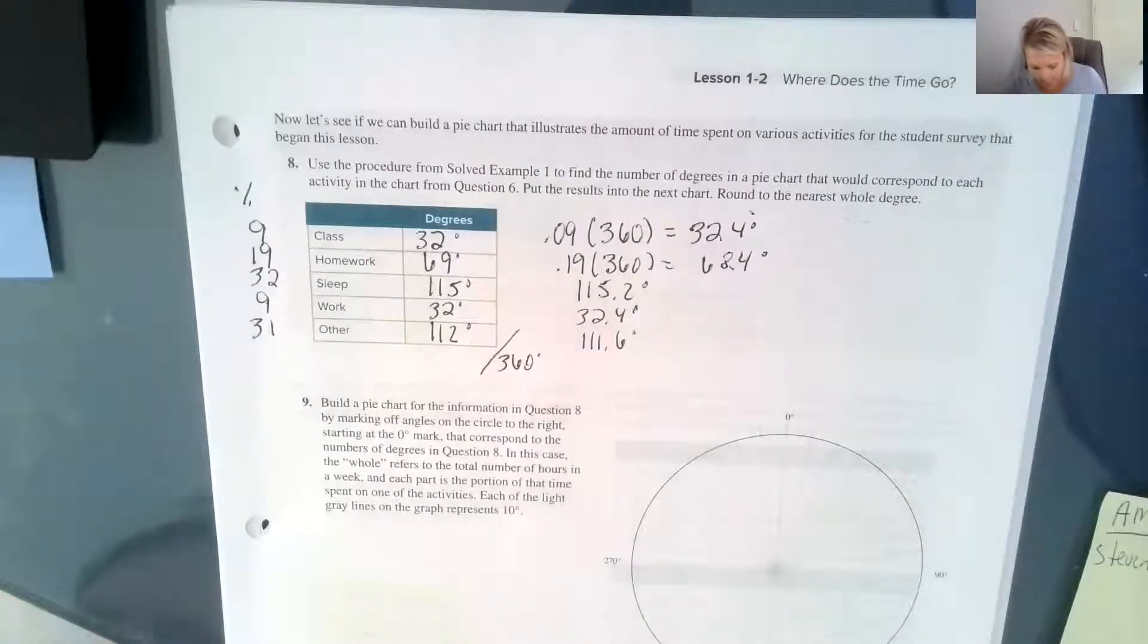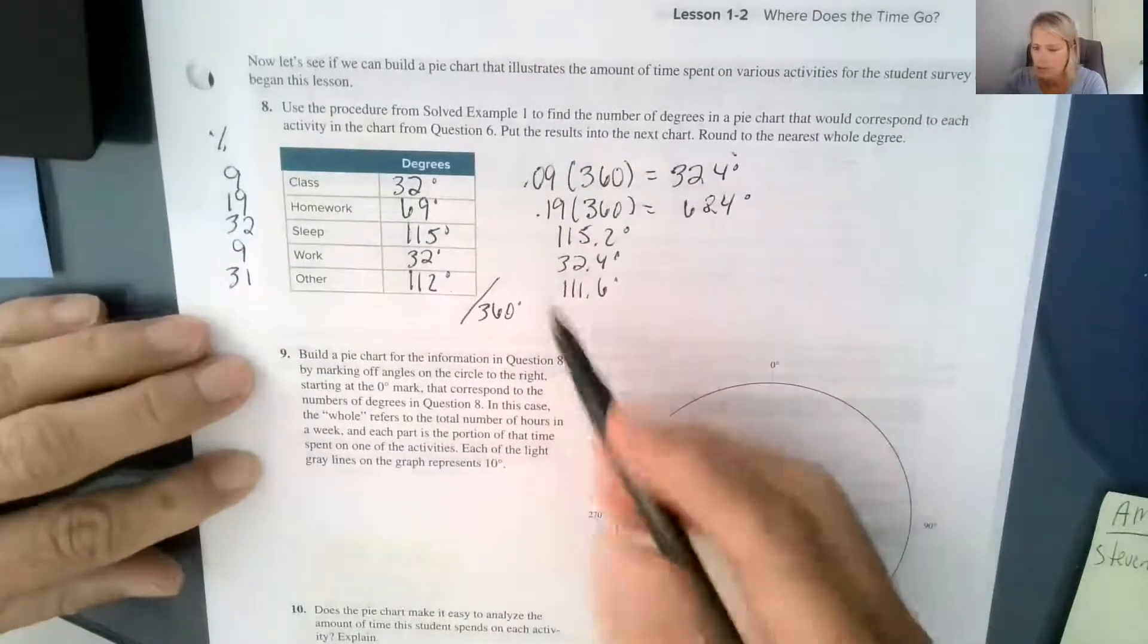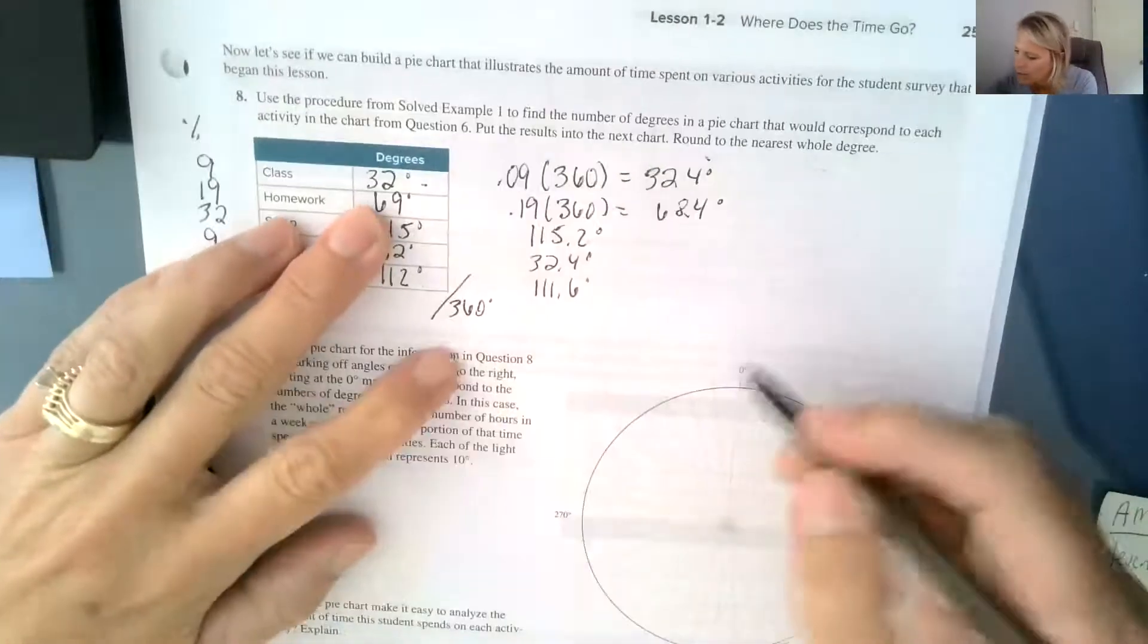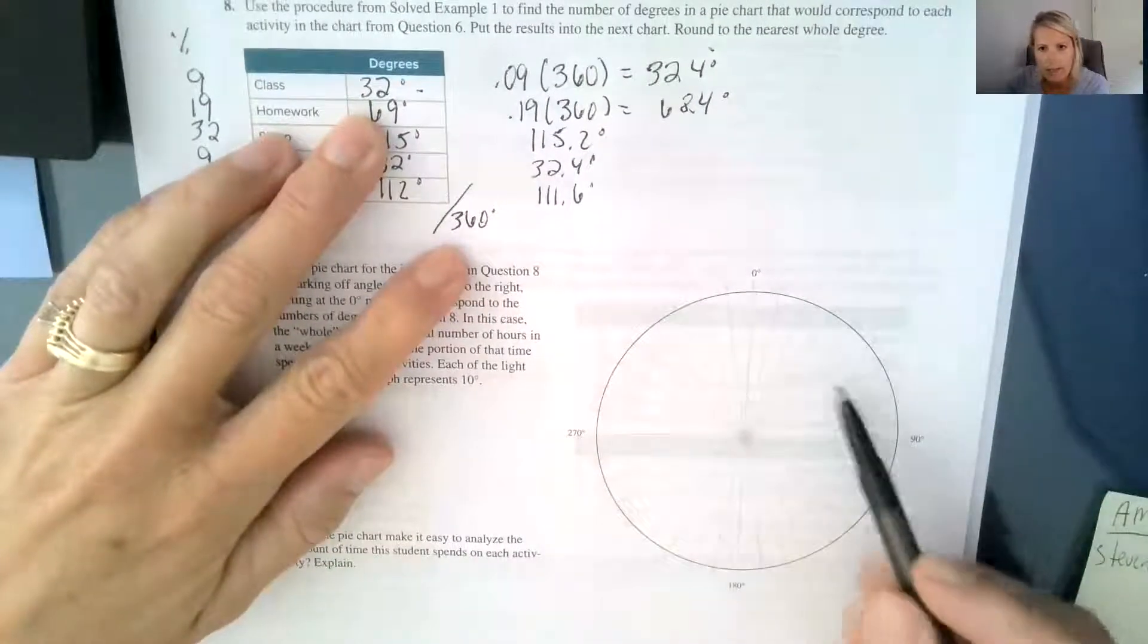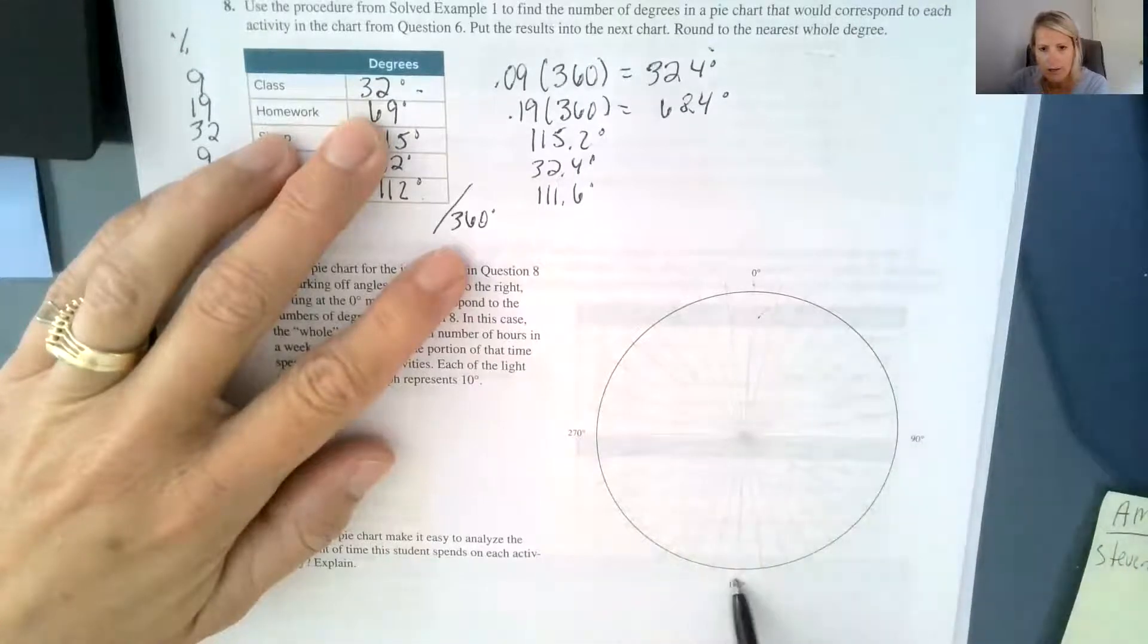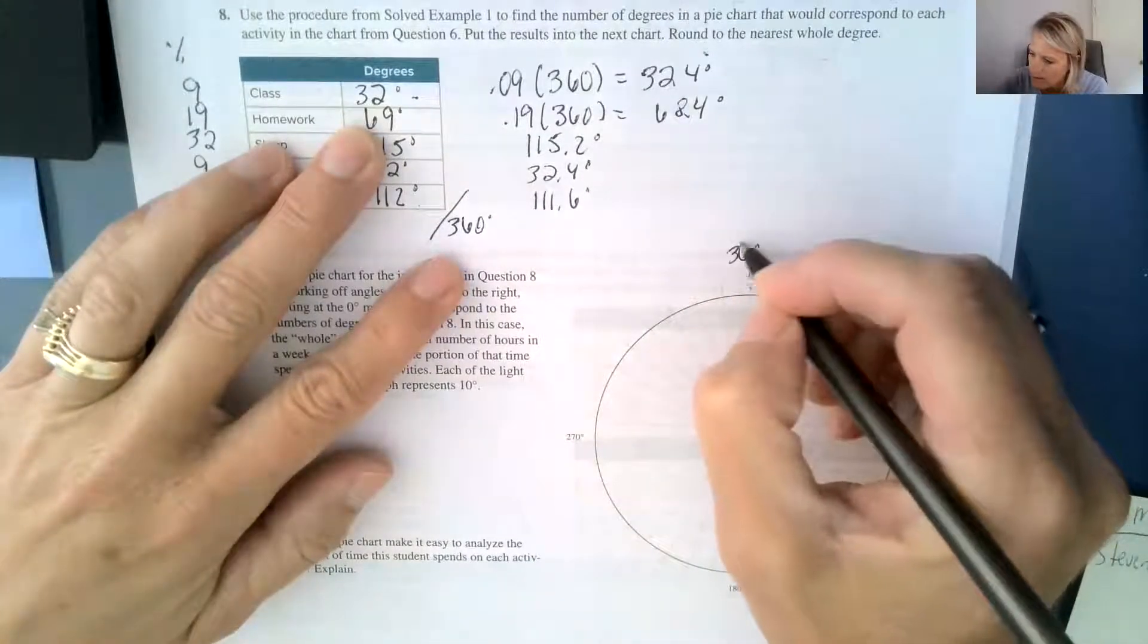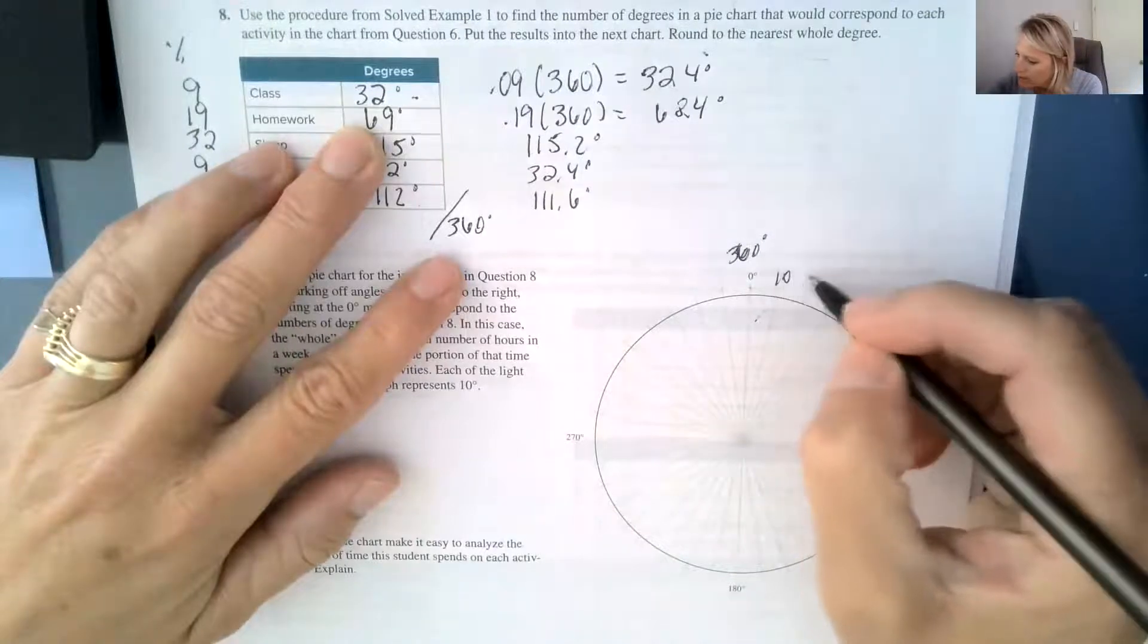Then they're asking us to create a pie graph to display these degrees. And so what I did was I started with my first one at 32 degrees, and I had to fill in my pie so that I kind of know what these other tick marks are between 0 and 90. So it starts at 0, and it goes around to 90, 180, 270, and then back to 0 or 360.